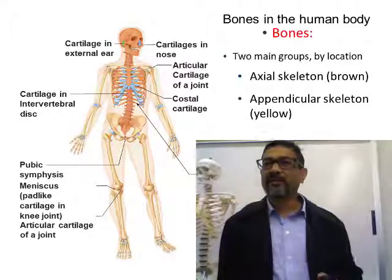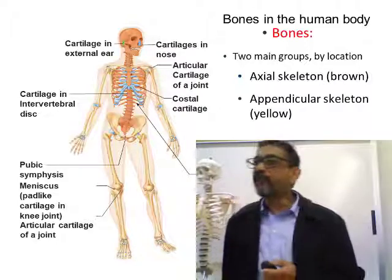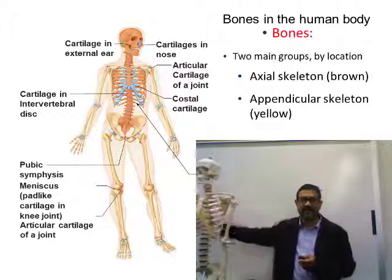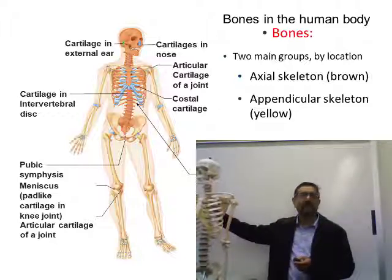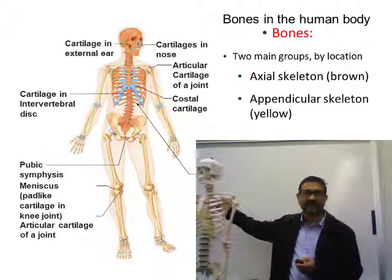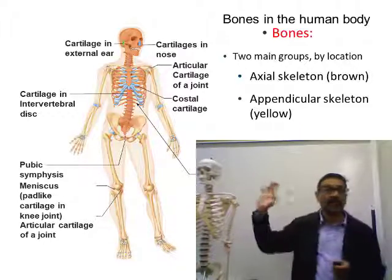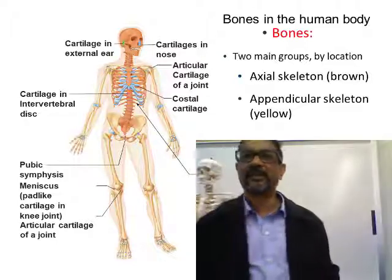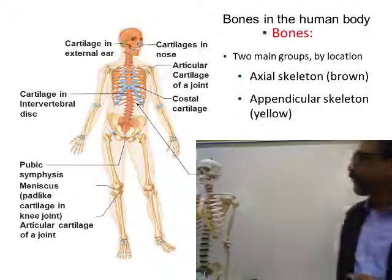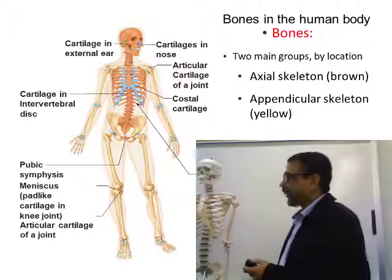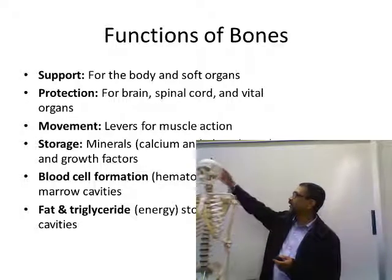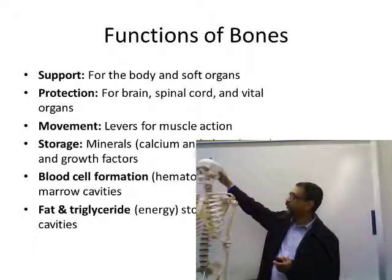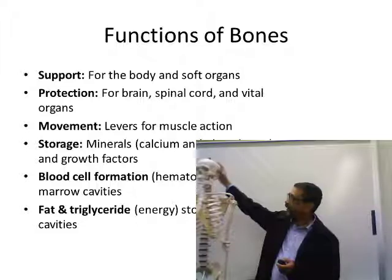Bones form the skeleton, which supports your whole body. So support is the number one function of the bones. Protection is another key function — different organs are protected by the bones. For example, your brain, the most important organ, is heavily protected by the cranial bones.